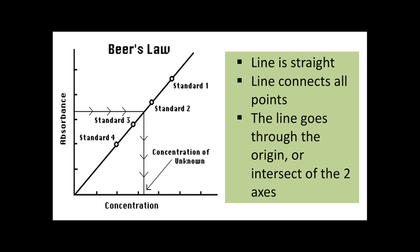Another method to get the concentration of the unknown is the standard curve. We plot concentration on the x-axis and absorbance on the y-axis, plotting values of the standards. The characteristics of this curve are: the line is straight, connects all points, and goes through the origin. For accurate calculation, the absorbance of the unknown must fall within the range of absorbances of your standards. If it doesn't, you may need to dilute the unknown or make different standards.